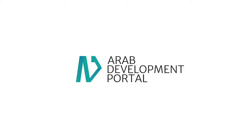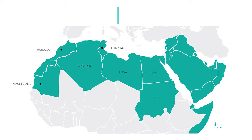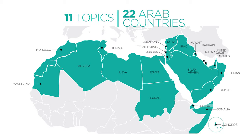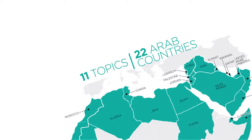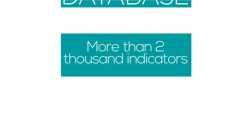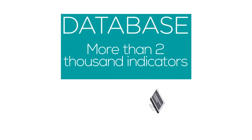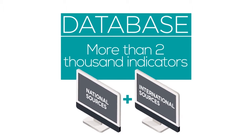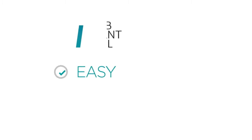The Arab Development Portal hosts a database and knowledge depository on all 22 Arab countries. As of now, the database includes 11 topics and thousands of updated indicators extracted from international and national sources. Many more will come.